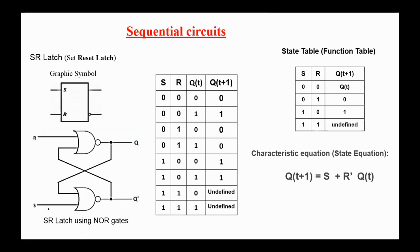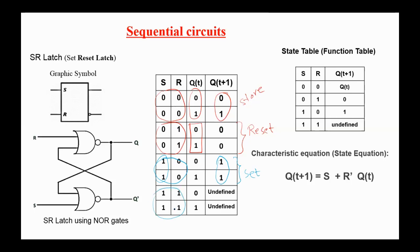Examining the characteristic table: if S and R are both zero, the next state equals the present state — this is the stored state. If S=0 and R=1, regardless of the present state, the next state is zero — this is called reset. If S=1 and R=0, the next state is one regardless of the present state — this is called set. The one-one combination is the undefined state, which is one disadvantage of the SR latch.